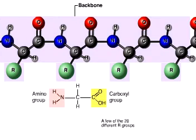Different amino acids have different properties that affect the folding of a protein. Thus, primary structure ultimately determines the shape of a protein, which determines its function.